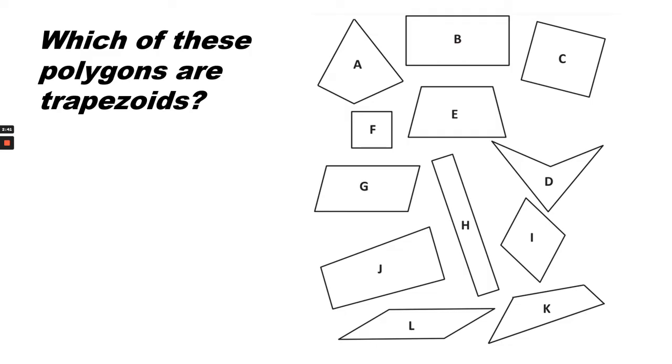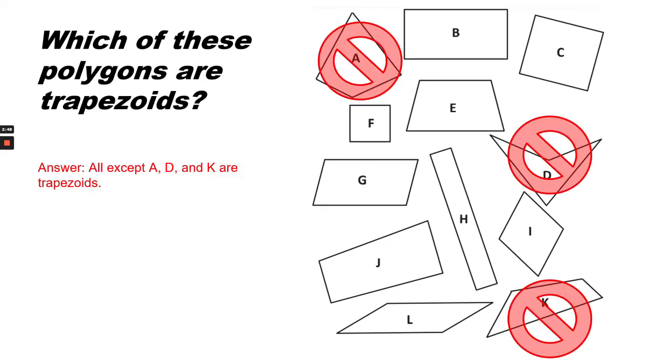Which of these polygons are trapezoids? All except A, D, and K are trapezoids. Remember, a trapezoid has at least one set of parallel lines.